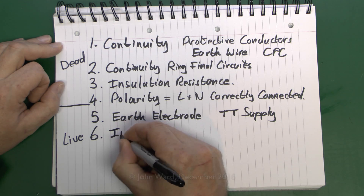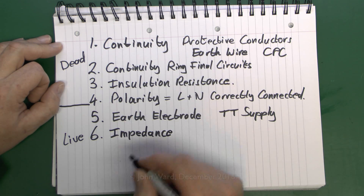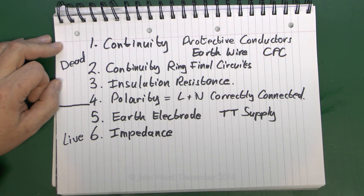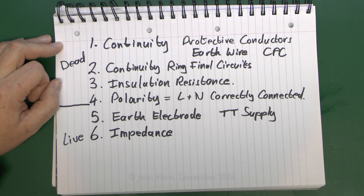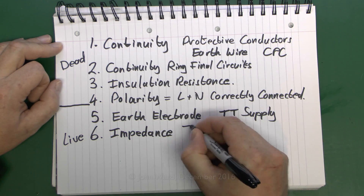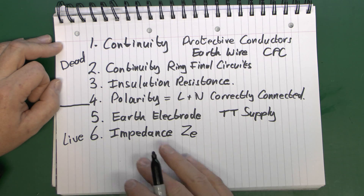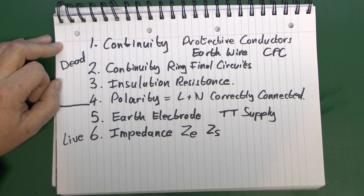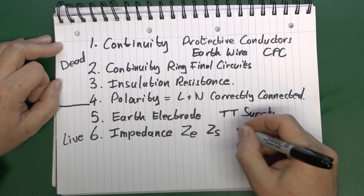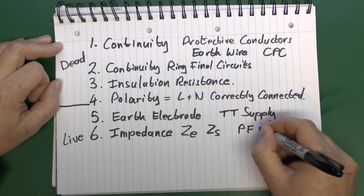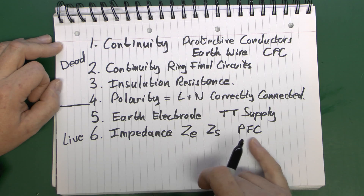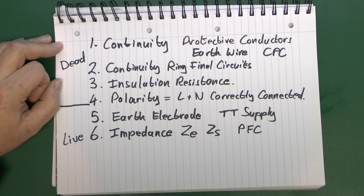Moving on, we have impedance — or more correctly, the earth loop impedance. This involves confirming that the supplier, or the electrode, has the correct impedance. For the external impedance, generally referred to as ZE, you also need to check the impedance of individual circuits to make sure that the devices will trip within the required time — that's generally given the symbol ZS. At the same time, you can actually check the prospective fault current: the current that would flow if the supply were shorted out. That's important in some installations depending on what protective devices you have installed.